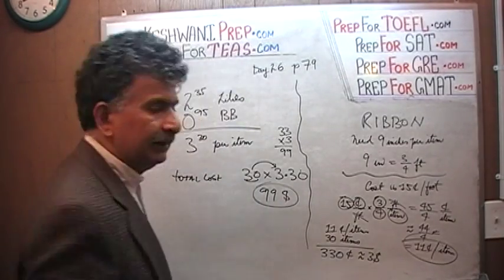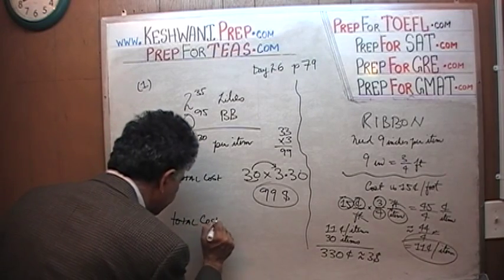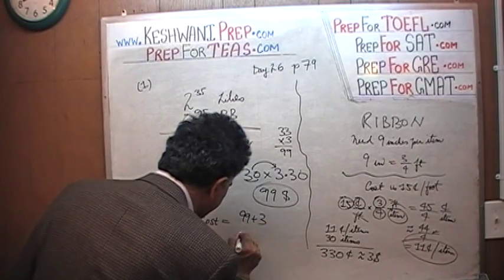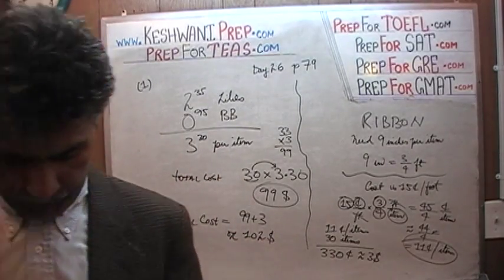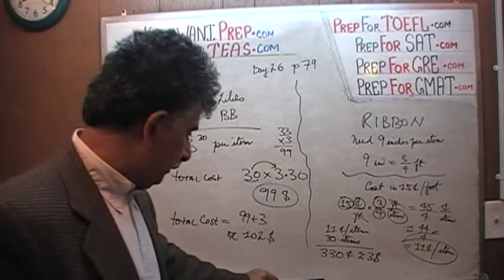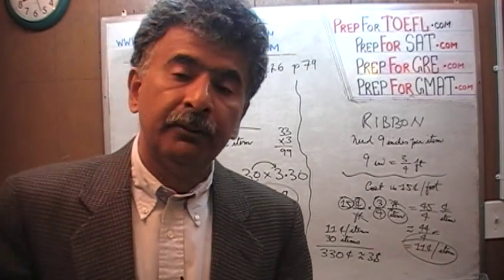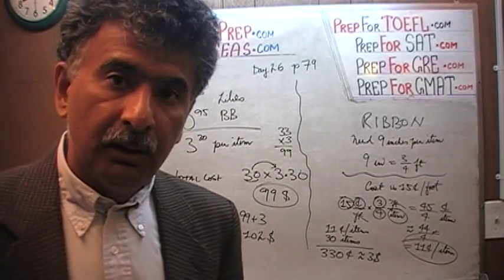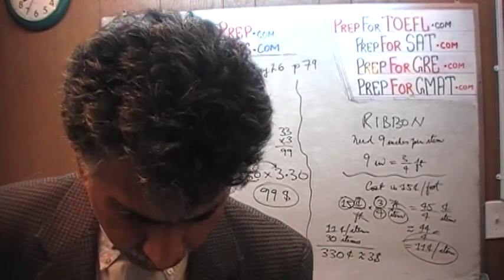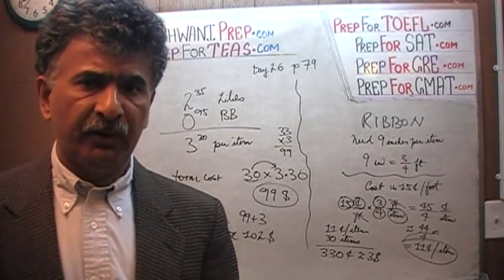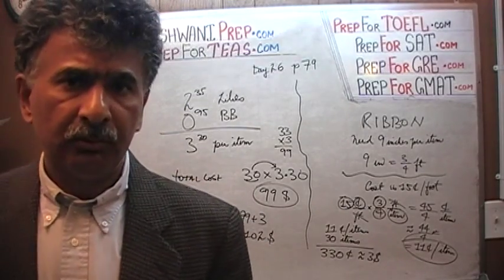And here we had $99. So the total cost is going to be $99 plus $3, which is $102 — not $120 — $102 total cost. I was about to do the next problem that you see on the page, which is a very simple, straightforward question, but that question is dealing with geometry. Let's keep it separate. I'll see you tomorrow. Bye now.